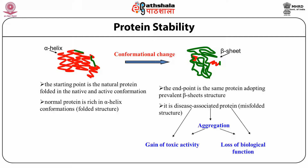The transition between secondary structures from alpha helix to beta sheet is discussed here. The starting point is the natural protein folded in its native and active conformation, which is rich in alpha helix. Conformational changes lead to formation of beta sheet, which is involved in some disease-associated proteins, leading to aggregation, gain of toxic activity, and loss of biological functions.